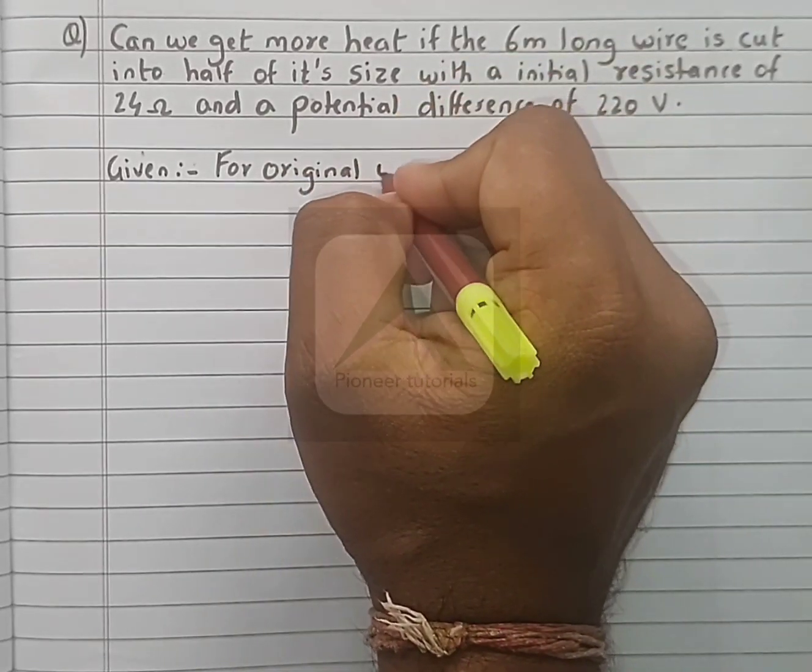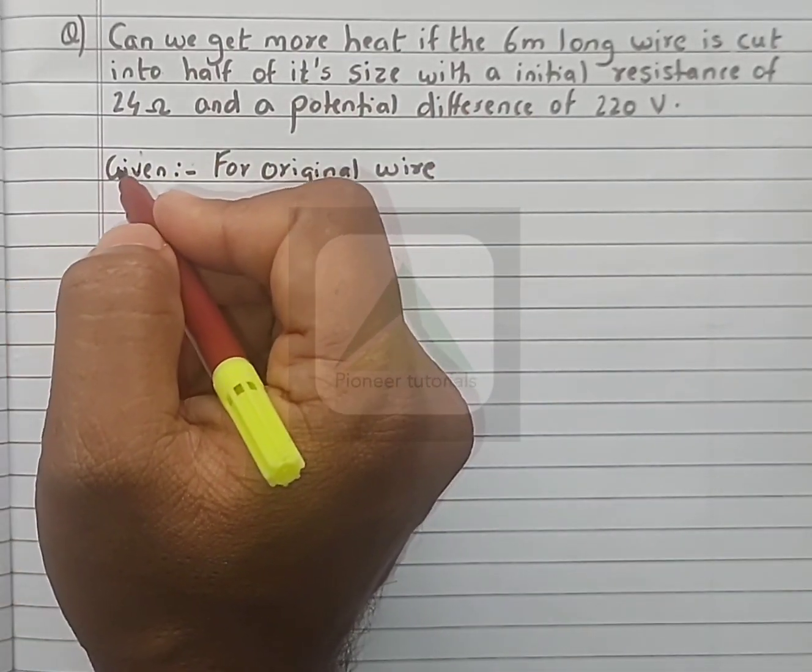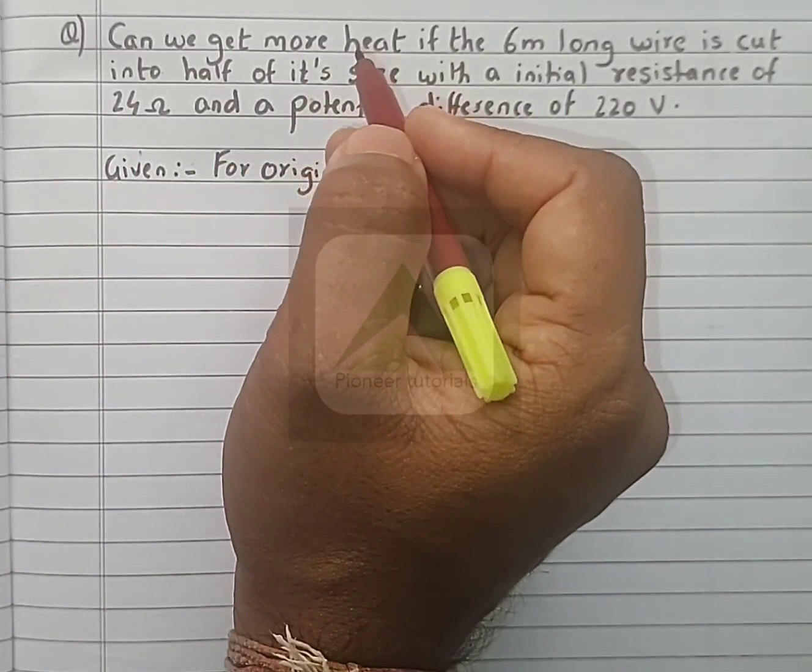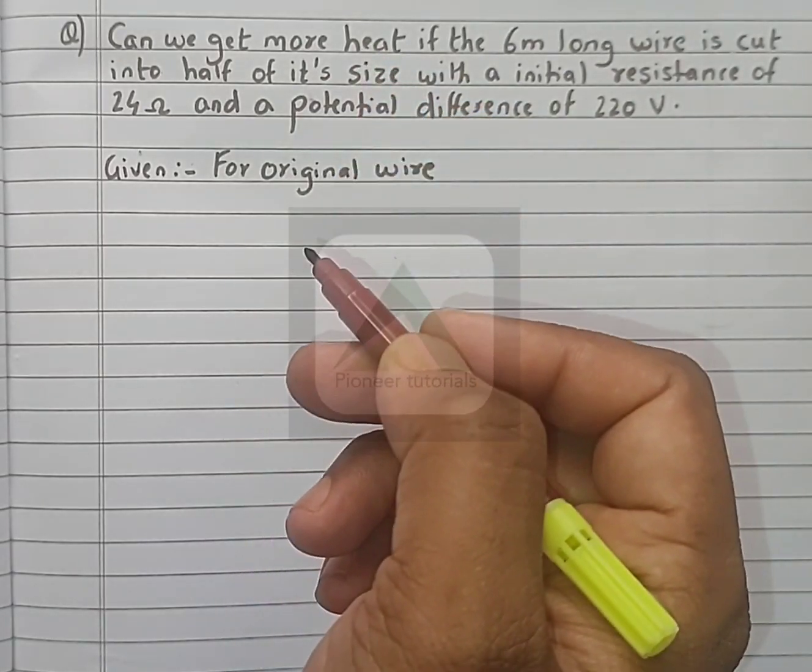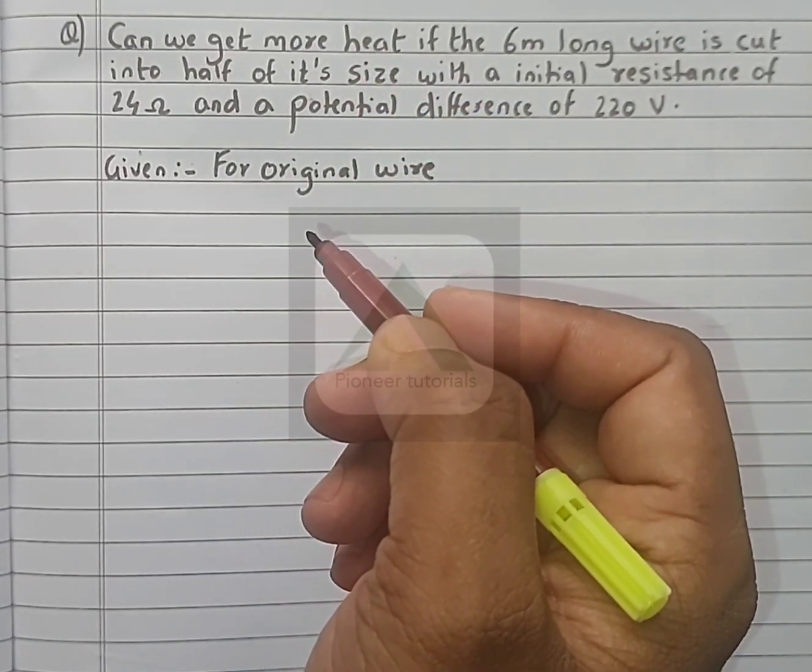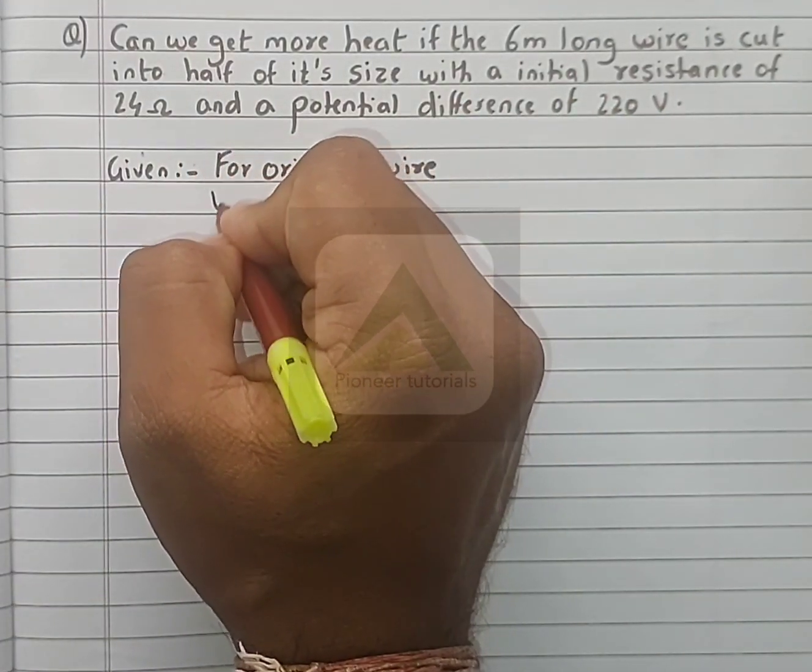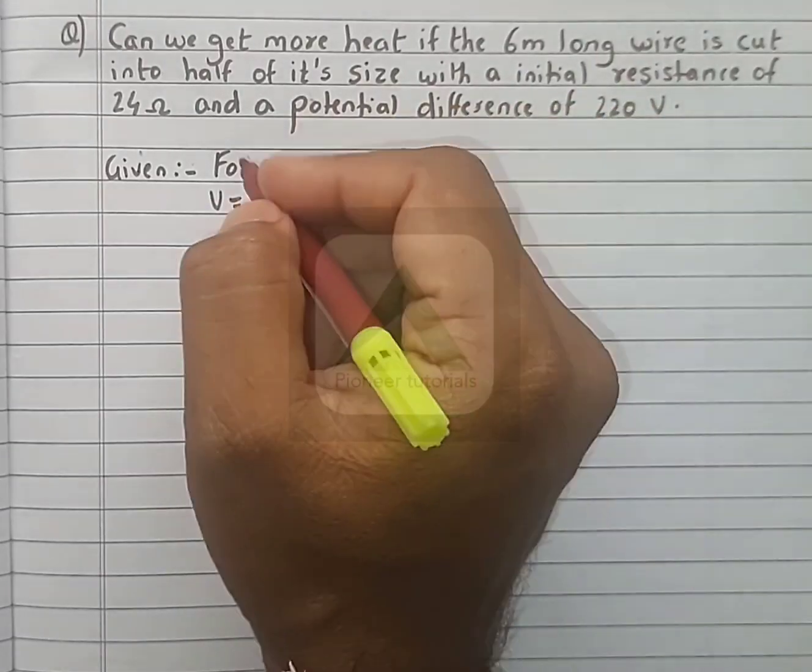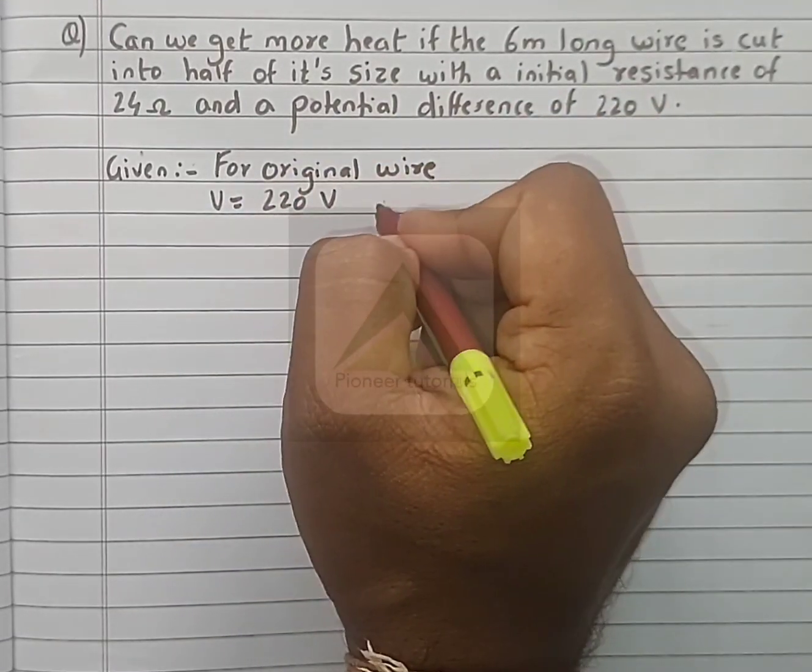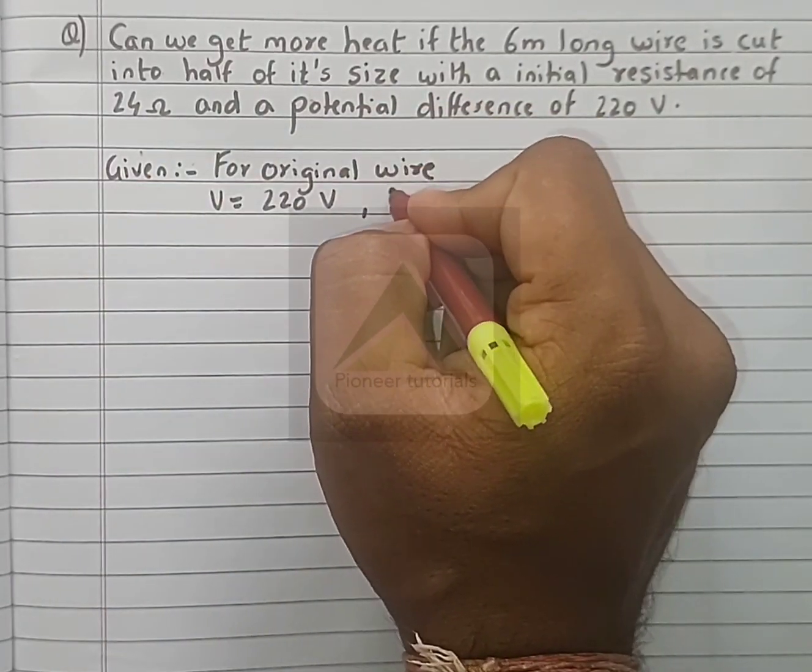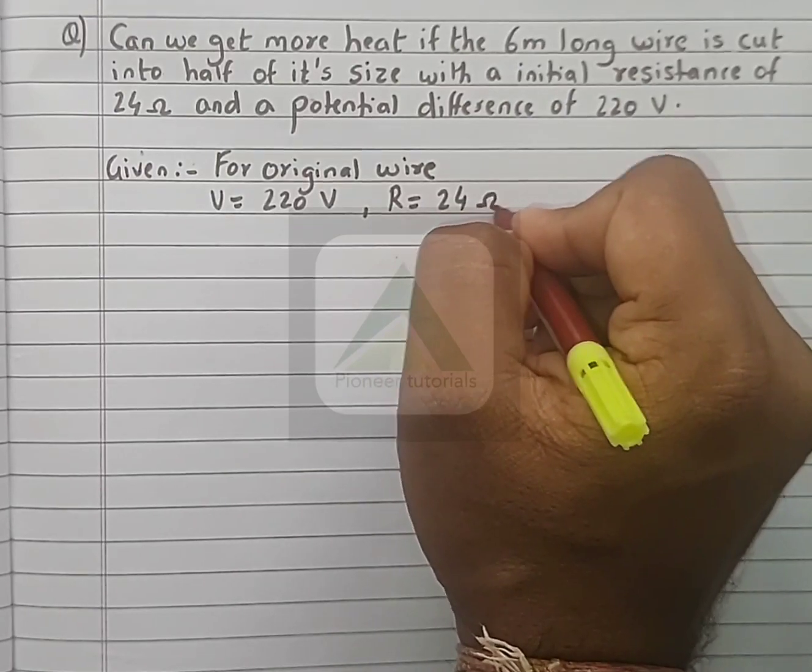For the original wire, we have to find the power. P = V²/R. V is equal to 220 volts, and resistance R is equal to 24 ohms.